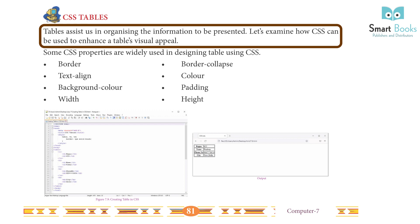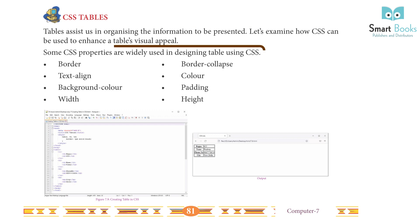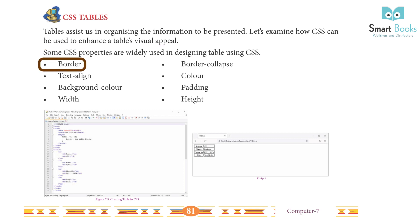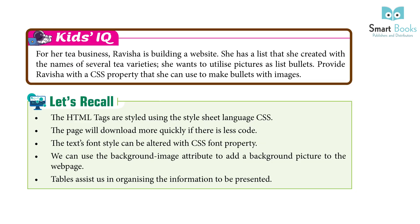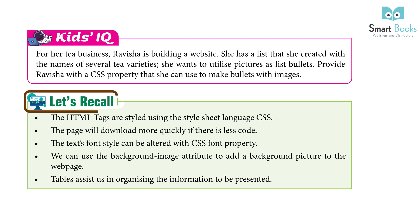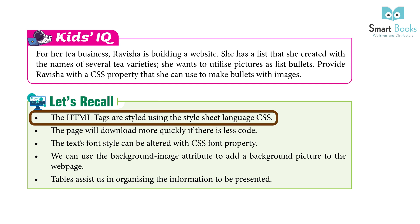CSS tables: tables assist us in organizing information. CSS properties widely used in designing tables include: border, border-collapse, text-align, color, background-color, padding, width, and height. Practice question: Ravisha is building a website and has a list of TV varieties. She wants to use images as bullets. Provide Ravisha with the CSS property she can use to make bullets with images.